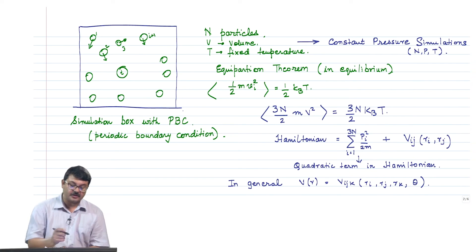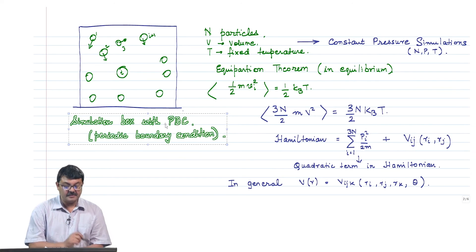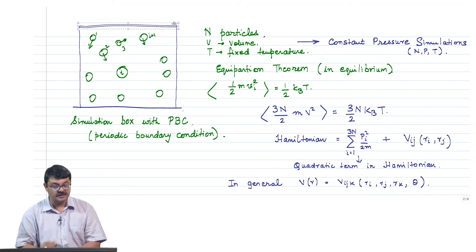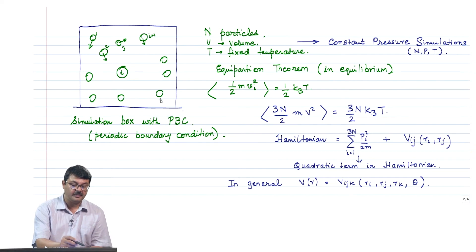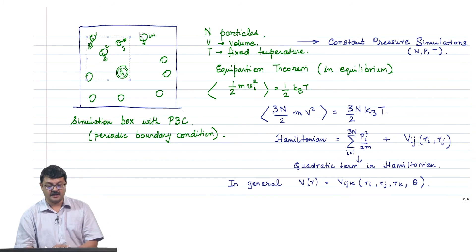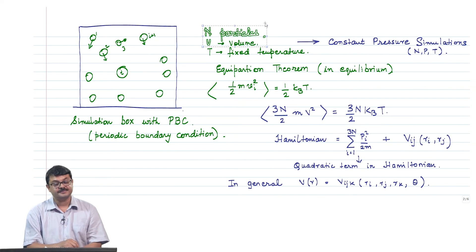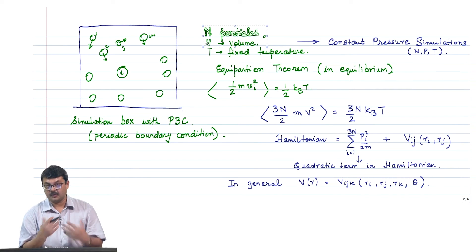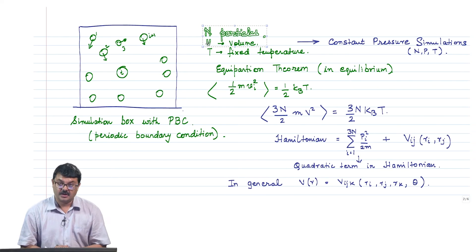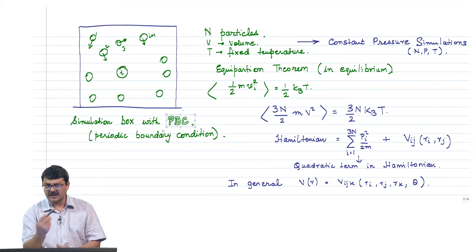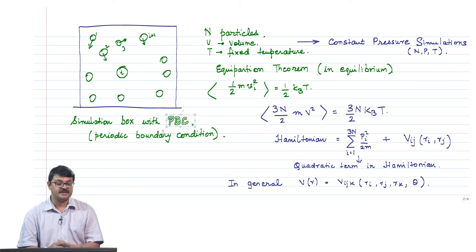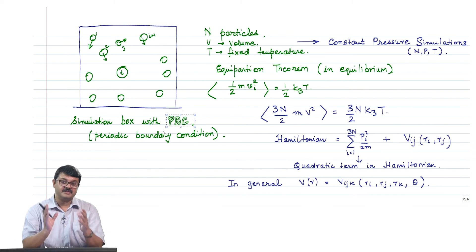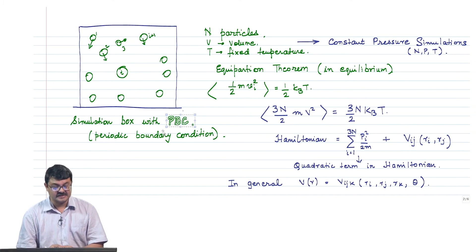The picture you will have is a simulation box with PBC — periodic boundary condition. You have a box and within it many particles moving around in space, labeled 1, 2, 3, i, i+1. In general you could have N particles in a box of volume V — you can take a cubic box, a spherical box, and so on. You can also have a box with walls, a confined system, where particles collide with the wall and come back. Basically you are trying to model nature with the appropriate potential.